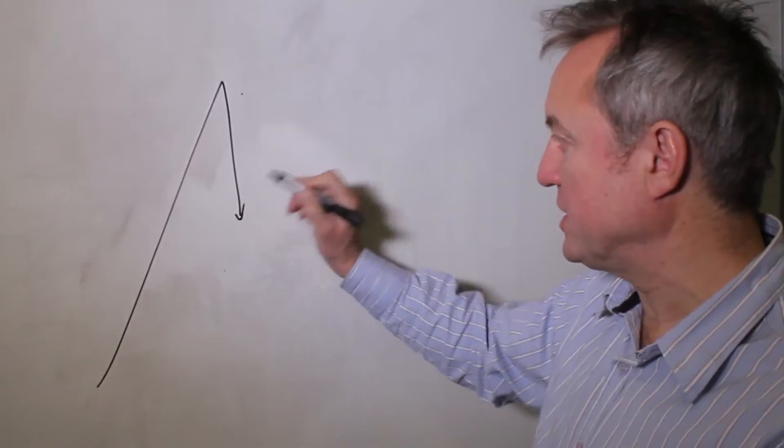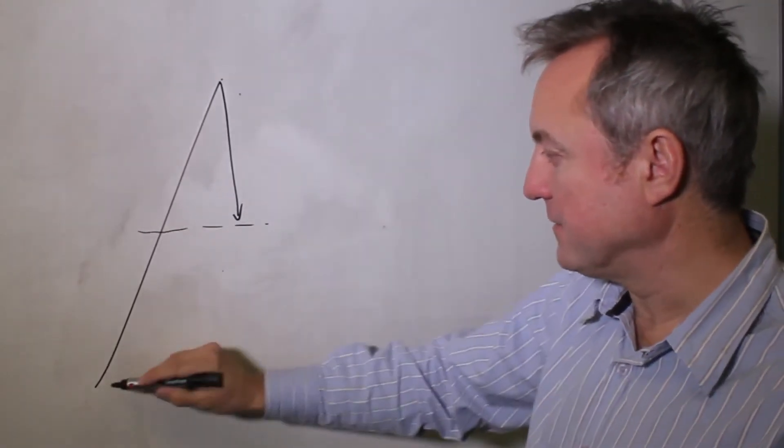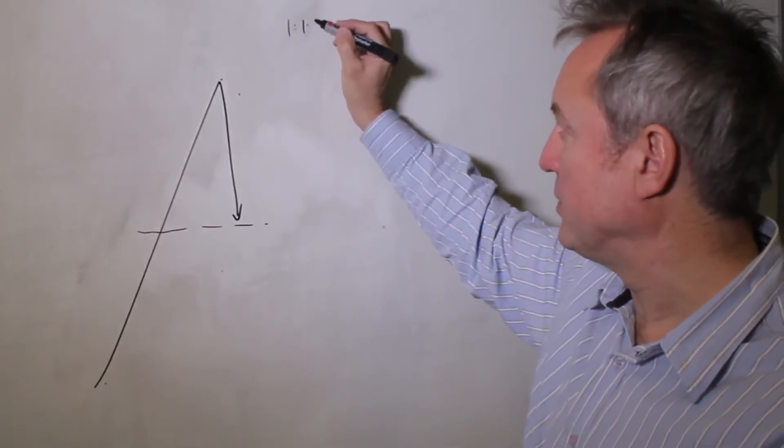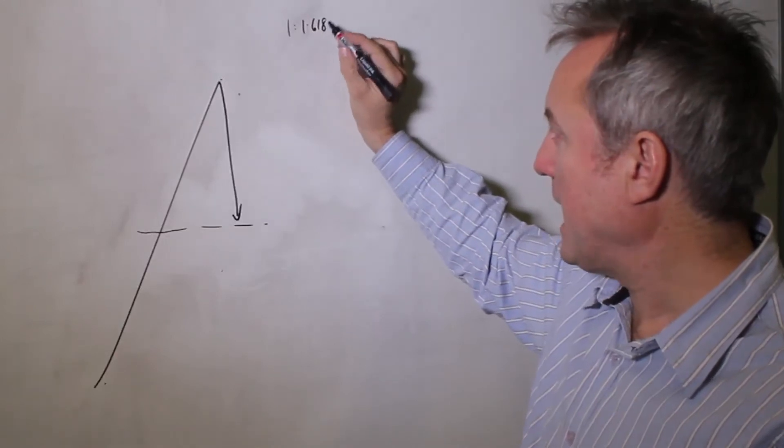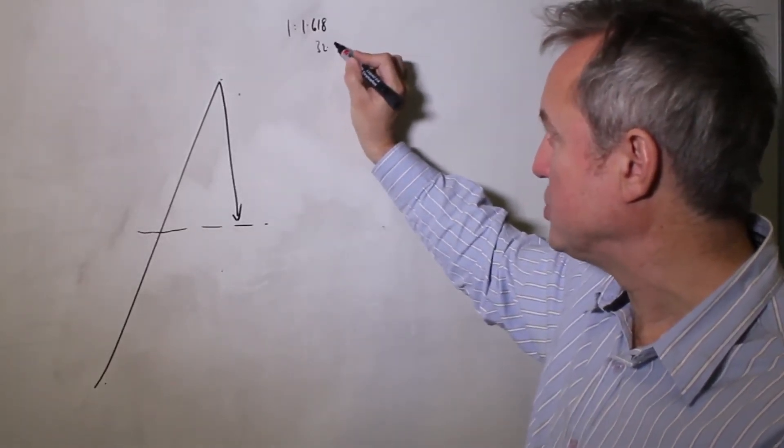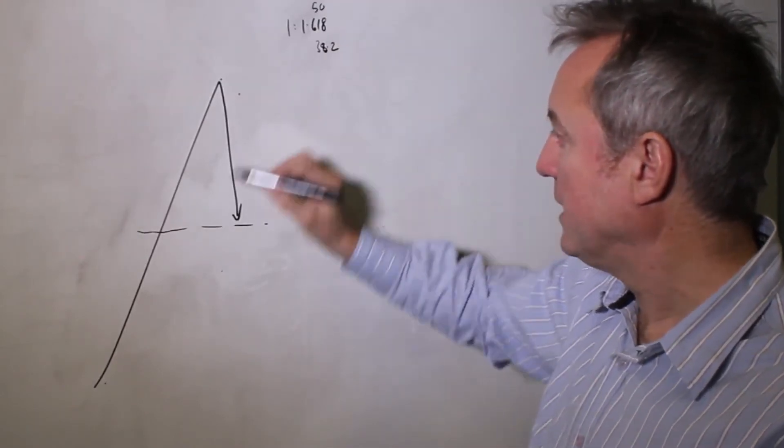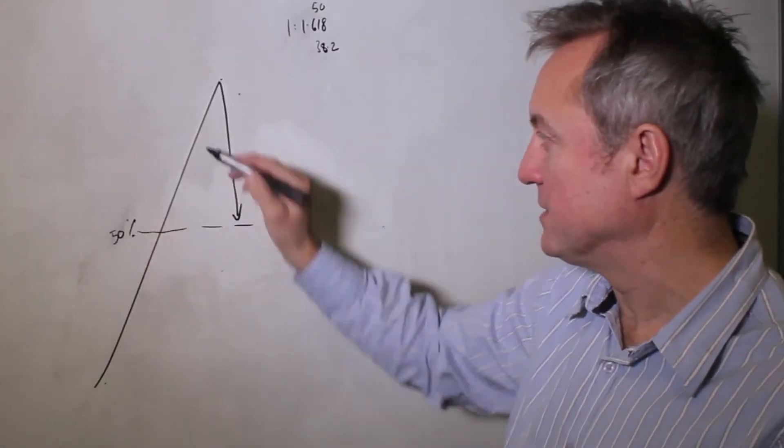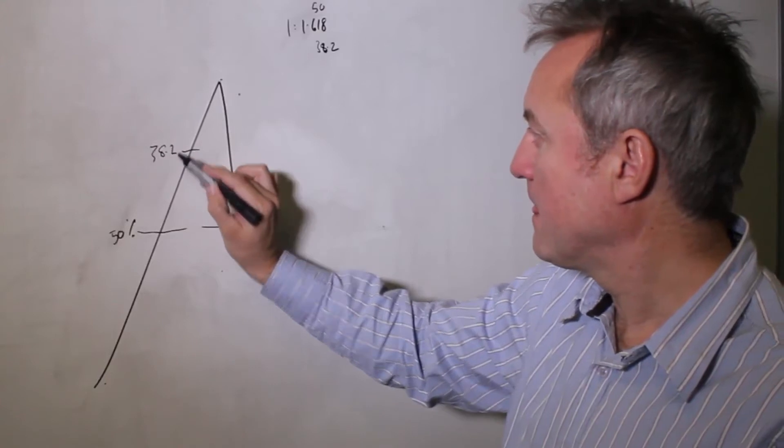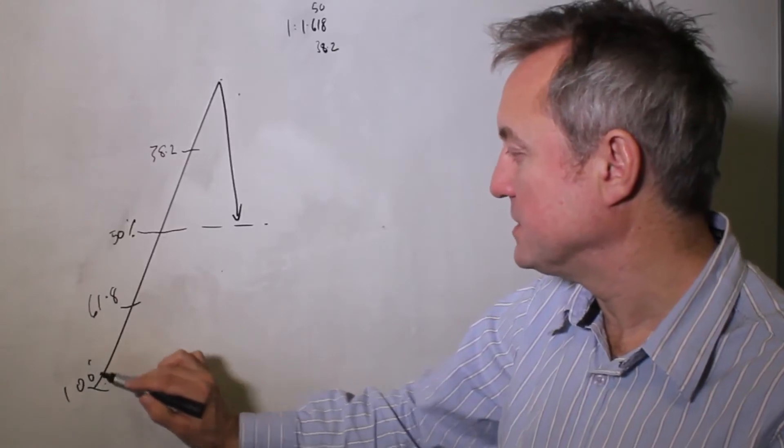One is to look at retracements. Basically, the Fibonacci sequence tends towards 1 to 1.68, and so we derive from which are derived a lot of important ratios: 38.2, 50, and 61.8. These ratios tend to be very powerful without going into the theory of it too much, and that's a hundred percent retracement.